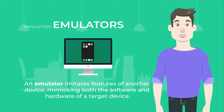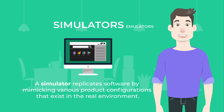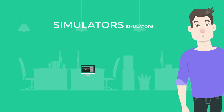An emulator imitates features of another device — it mimics both the software and hardware of a target device. Thanks to this, you can understand how real software and hardware would behave. A simulator replicates software only; it mimics various product configurations that exist in the real environment.